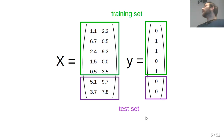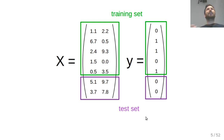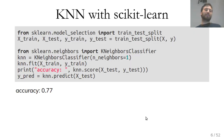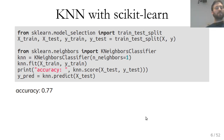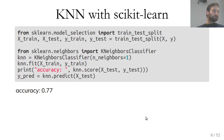With scikit-learn, we start by splitting data into a training set and a test set. We build the model on the training set and evaluate how well it generalizes to new unseen data on the test set. The train_test_split function takes your features X and targets Y, shuffles the data, and splits it — by default 75% training and 25% test.